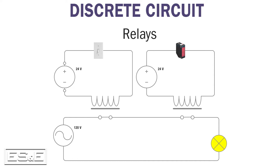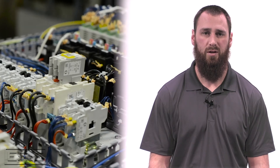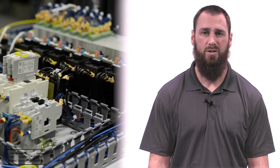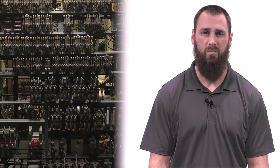Combining multiple circuits with relays is the beginning of an automation system. However, as relay control systems grow, the complexity of the wiring in the entire system also grows. A simple circuit can quickly grow into a very large complex panel. In a traditional relay logic panel, it can be very difficult to diagnose and troubleshoot issues due to the complexity.